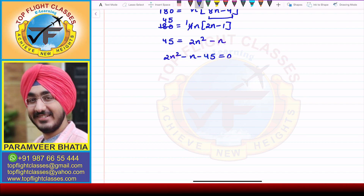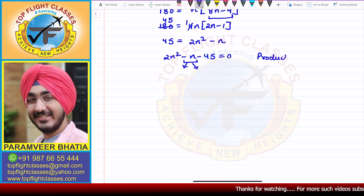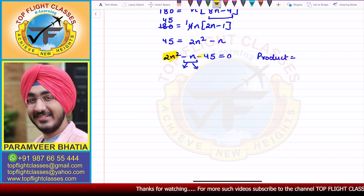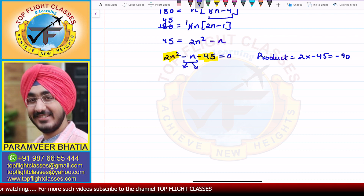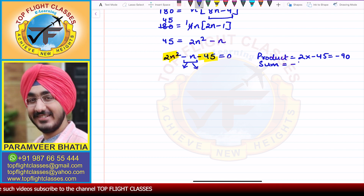Here we apply middle term splitting. We need to split minus N into two terms such that their product equals the product of the coefficient of N squared, which is 2, and the constant term, which is minus 45. So, 2 times minus 45 = minus 90 should be the product of the two terms, and their sum should equal the middle term, which is minus 1.